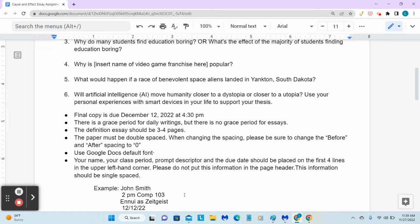Number five is pure speculation. What would happen if a race of benevolent space aliens landed in Yankton, South Dakota? You've got this as the cause. This is the thing that was caused by, you know, this is the cause. What's the effect? What's going to happen if that happens?